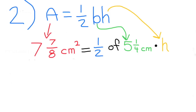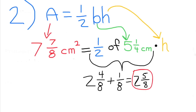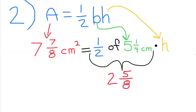In this case, the area is 7 7/8 cm² and the base is 5 1/4 cm. The height is unknown. Here I show half of the base. Since the area was in eighths, I'm going to make the base in eighths as well. First, I'm going to cut 5 in half — half of 5 is 2 4/8. Now I'm going to cut the 1/4 in half — half of 1/4 is 1/8. Adding them together, I get 2 5/8.